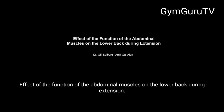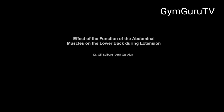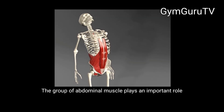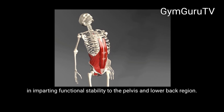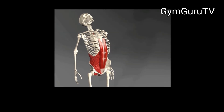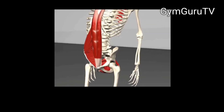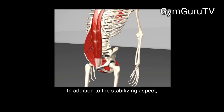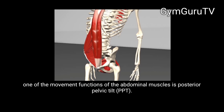Effect of the function of the abdominal muscles on the lower back during extension. The group of abdominal muscles plays an important role in imparting functional stability to the pelvis and lower back region. In addition to the stabilizing aspect, one of the movement functions of the abdominal muscles is posterior pelvic tilt.